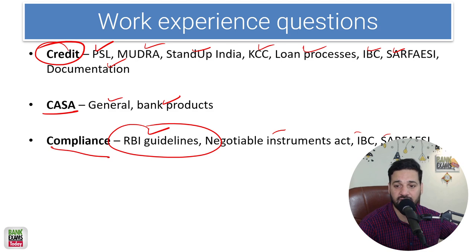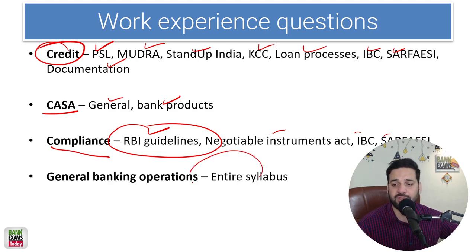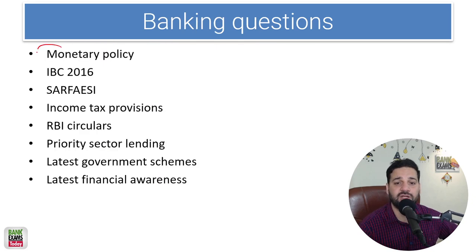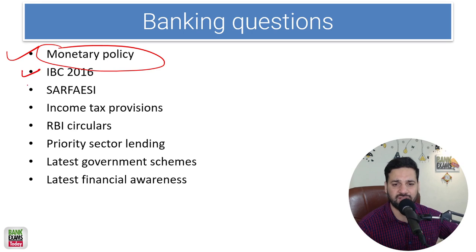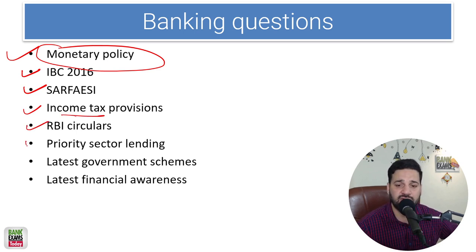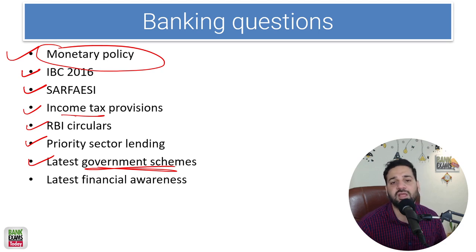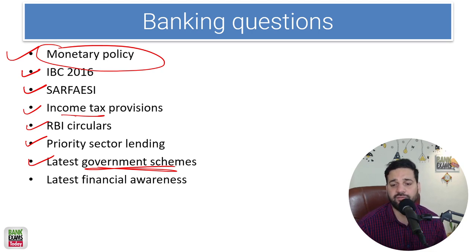If you are in general banking operations, you need to know the entire syllabus — monetary policy, IBC, SARFAESI, the NI Act, income tax provisions related to housing loans, tax saving FDs, RBI circulars, priority sector lending, and the latest government schemes. Popular schemes are really important: Jan Dhan Yojana, Mudra Yojana, Atal Pension Yojana, all pension schemes, insurance schemes, and loan schemes — especially schemes for the benefit of farmers. The latest financial awareness from the last two to three months that can be relevant is also very important.